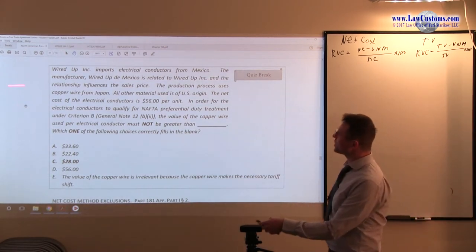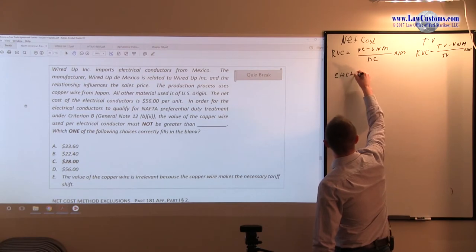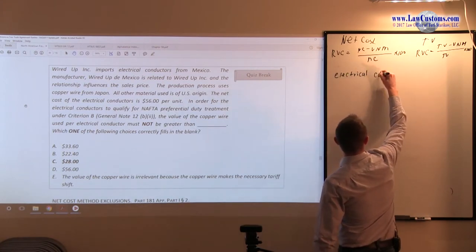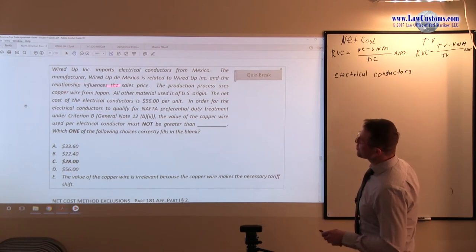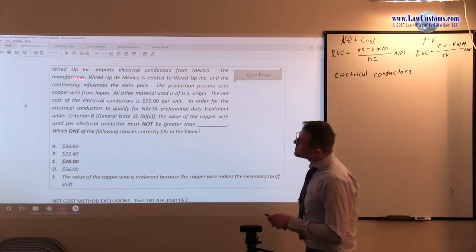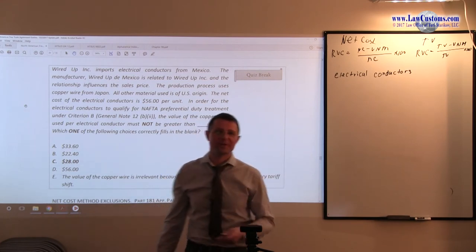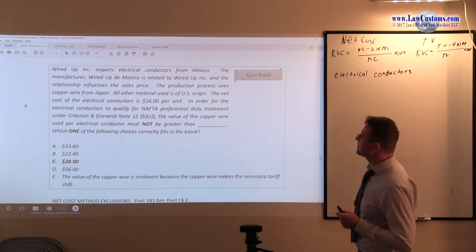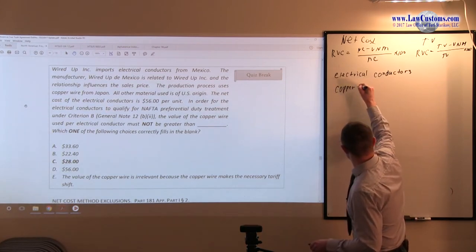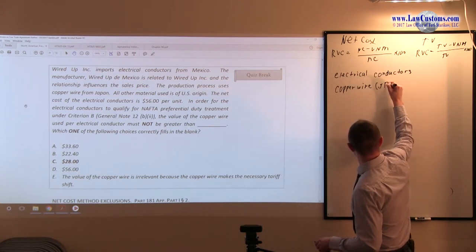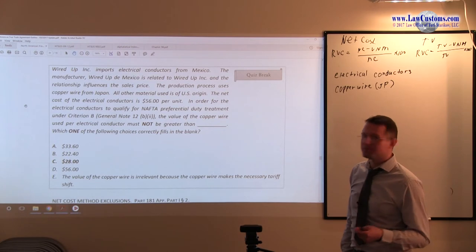We have the following. Wired Up Imports Electrical Conductors from Mexico. So we have electrical conductors. The relationship influences the sale price. So because the relationship influences the sale price, transaction value is not for us. Our guy is the net cost guy. That's the thing to keep in mind. The production process uses copper wire from Japan. So we have copper wire made in Japan. And other materials are used of US origin, so it's a NAFTA country.